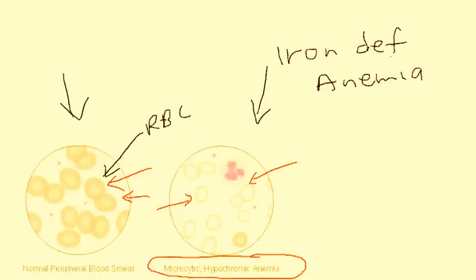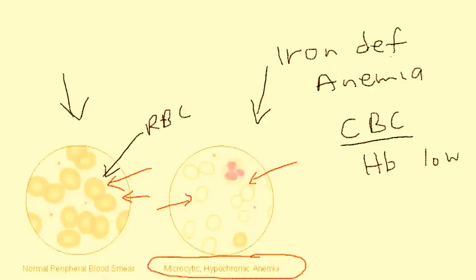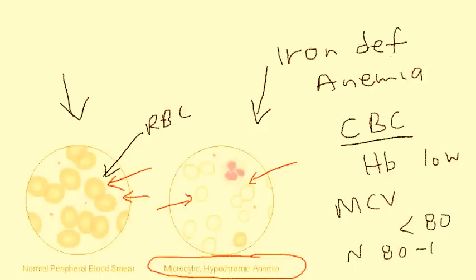The microcytic finding is measured in the CBC with a lab value called MCV. In iron deficiency, the MCV will be less than 80. Normal MCV is between 80 and 100.